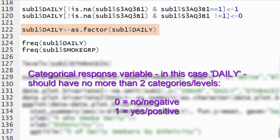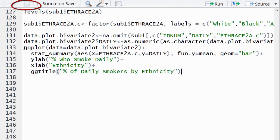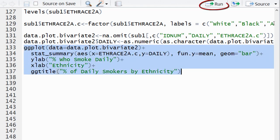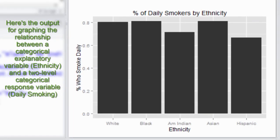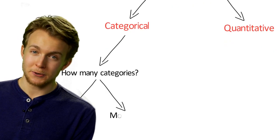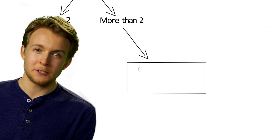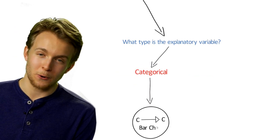The response variable should not have more than two categories or levels, and those two categories should be coded as 0 and 1. Zero represents no or negative observations, and 1 represents yes or positive observations. Because our response variable was categorical with more than two categories, we needed to collapse it into only two categories. And because our explanatory variable — ethnicity — was categorical, we created a categorical-by-categorical bar chart.